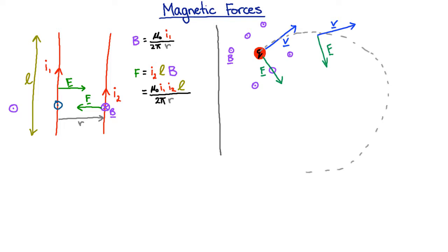And we can figure out how big a circle, because we know that the centripetal acceleration has to be provided by the magnetic force. And so the magnetic force is going to be equal to the mass of that particle times its velocity squared divided by the radius of that circle.